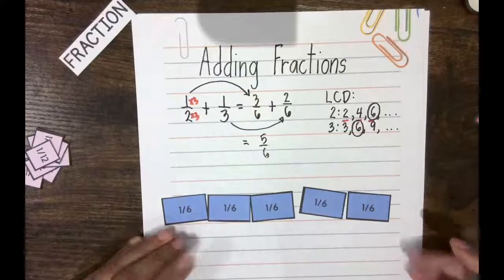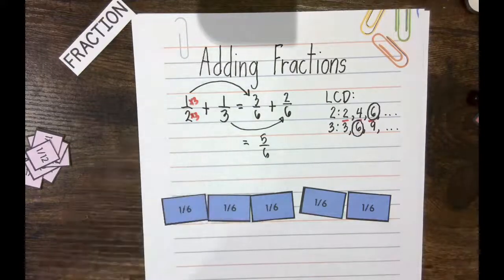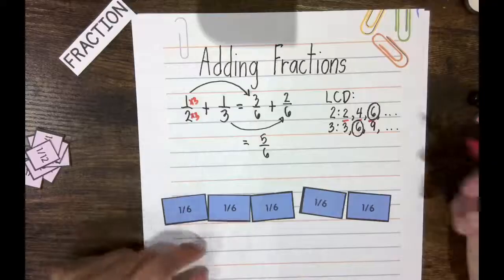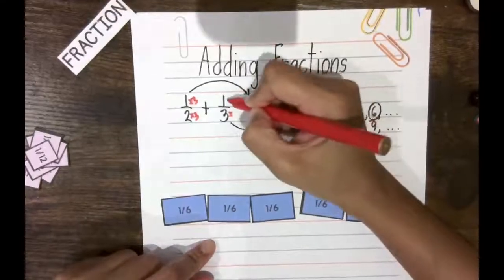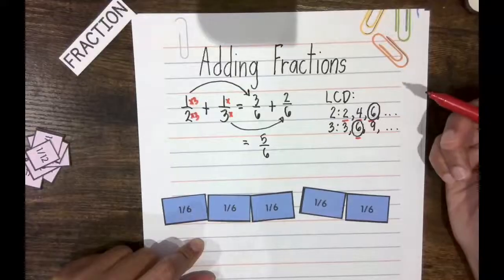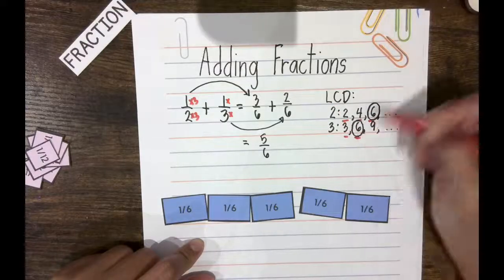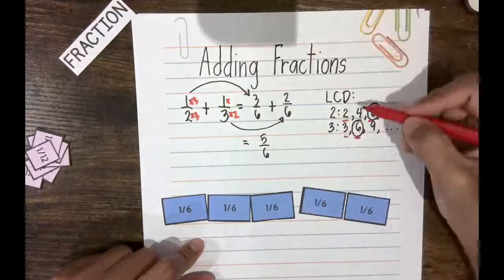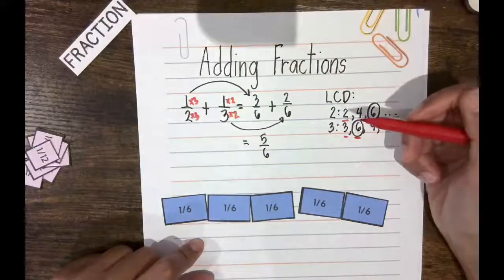Now, when I change 1/3 into 2/6, that's really no different than changing the denominator of 1/3 into 6, which means multiplying 3 by 2, and multiplying 1 by 2 also.